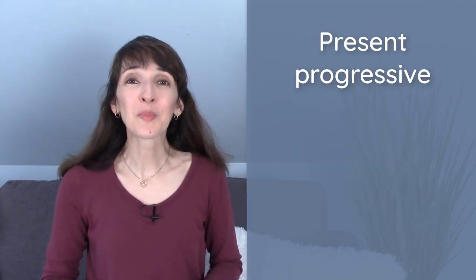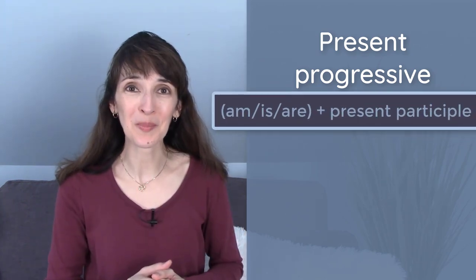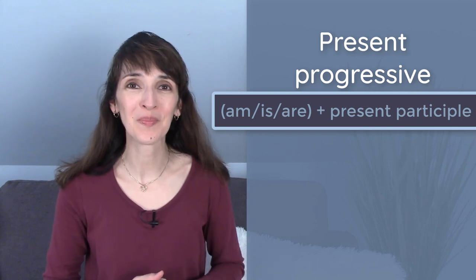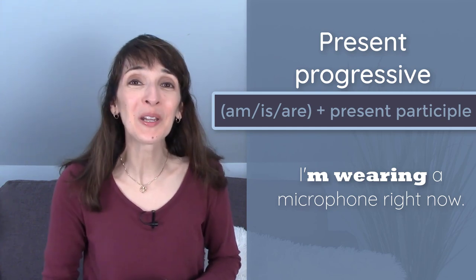The present progressive uses am, is, or are plus the present participle, that -ing form. For example, I'm wearing a microphone right now so that you can hear well.